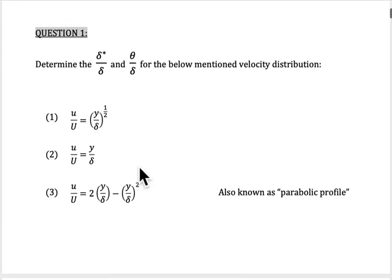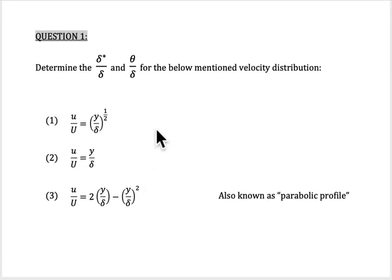For question number one, usually you will be asked about how to determine the delta star over delta and theta over delta for the below mentioned velocity distribution. As we discussed previously, delta star is the displacement thickness of boundary layer and delta here is the boundary layer thickness.